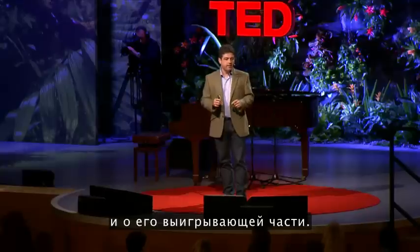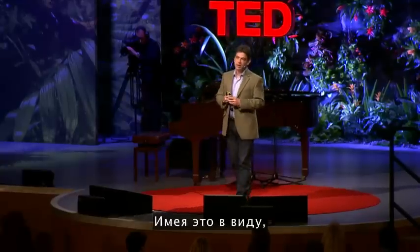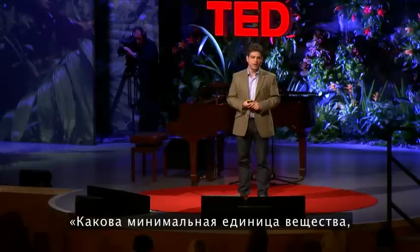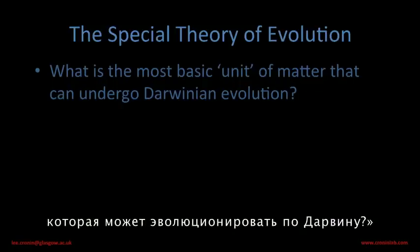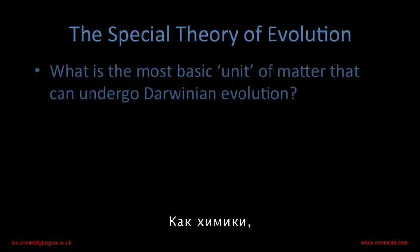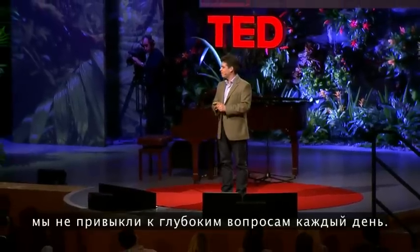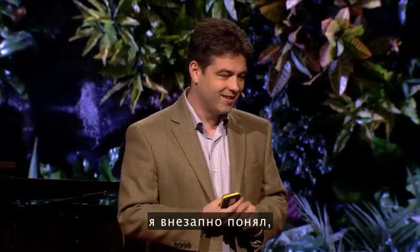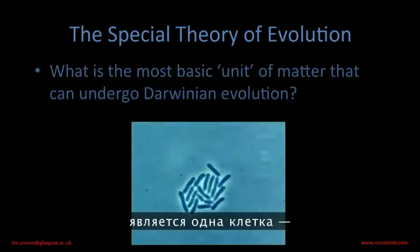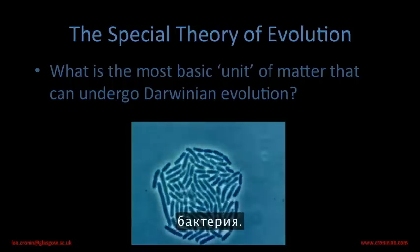So forget about evolution in a metaphysical way. Think about evolution in terms of offspring competing, and some winning. As a chemist, I wanted to ask myself: what is the minimal unit of matter that can undergo Darwinian evolution? And this seems quite a profound question. Biology gave us the answer — the smallest unit of matter that can evolve independently is in fact a single cell, a bacteria.